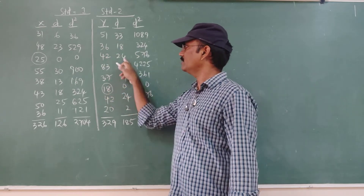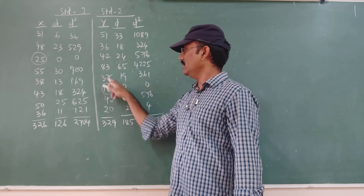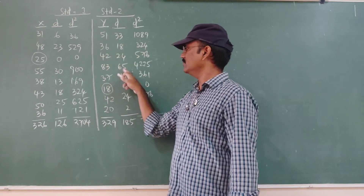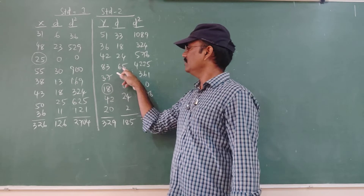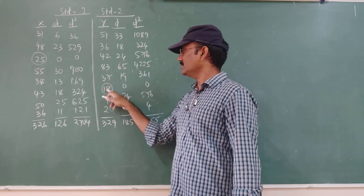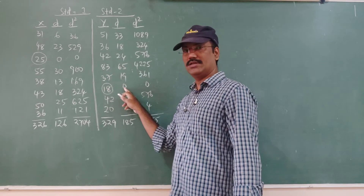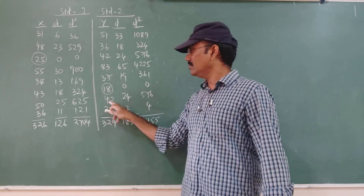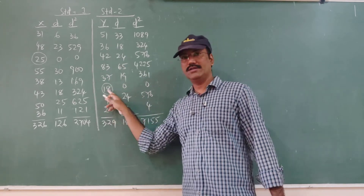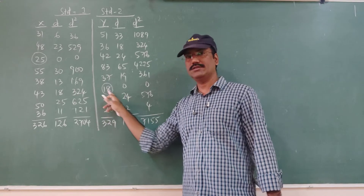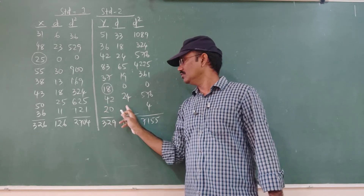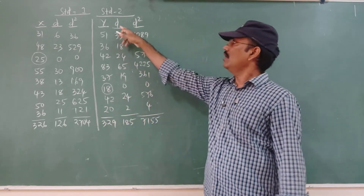42 minus 18 = 24, 83 minus 18 = 65, 37 minus 18 = 19, 18 minus 18 = 0, 42 minus 18 = 24, 20 minus 18 = 2.